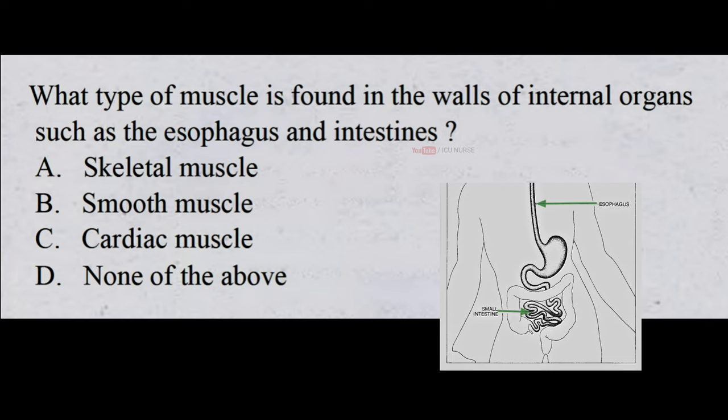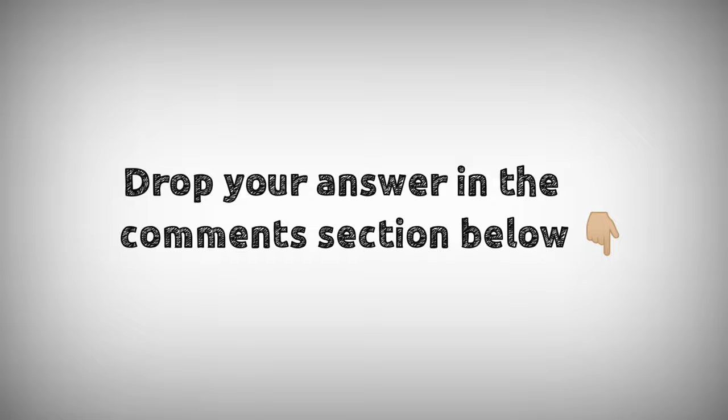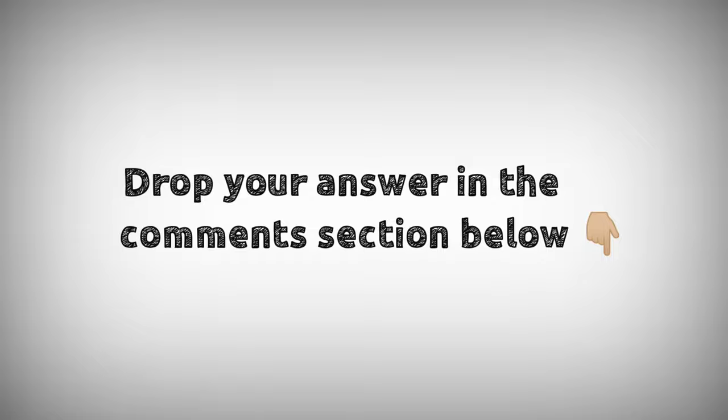What type of muscle is found in the walls of internal organs such as the esophagus and intestines? A. Skeletal muscle. B. Smooth muscle. C. Cardiac muscle. D. None of the above. Drop your answers in the comment section below. For downloading PDF content and for latest updates, follow our Telegram channel — the link is in the description below.